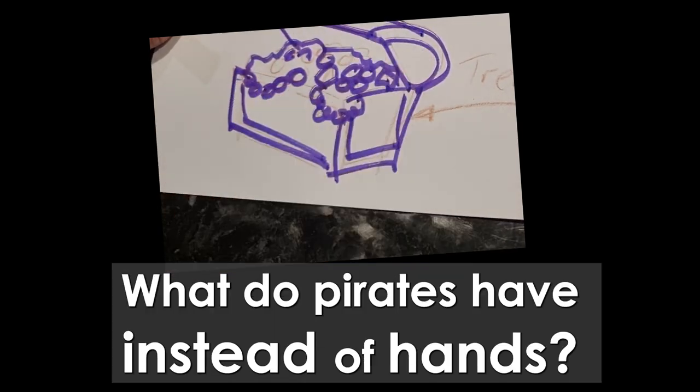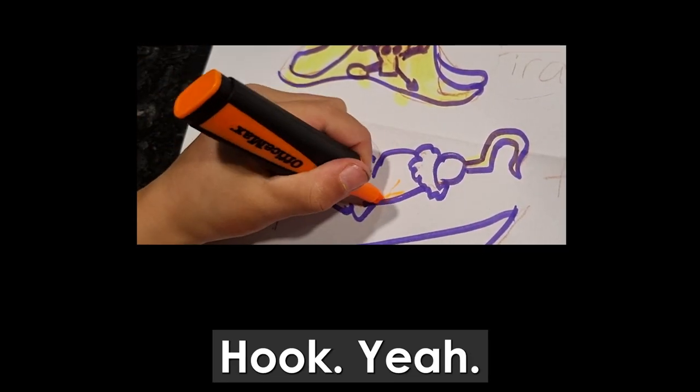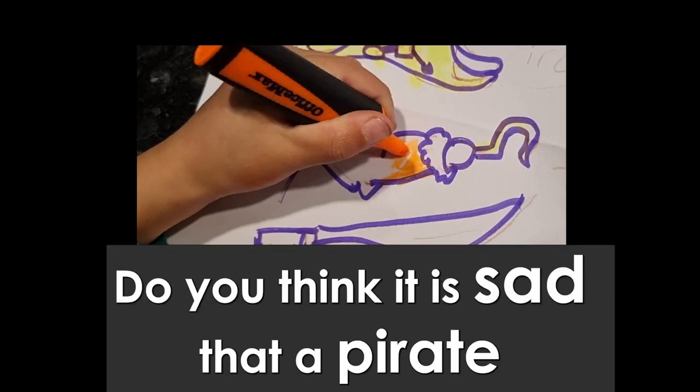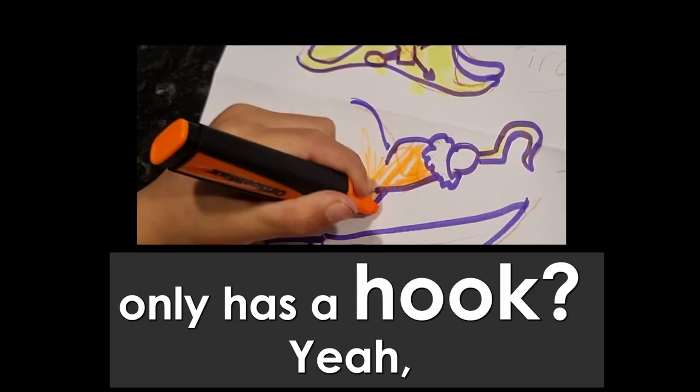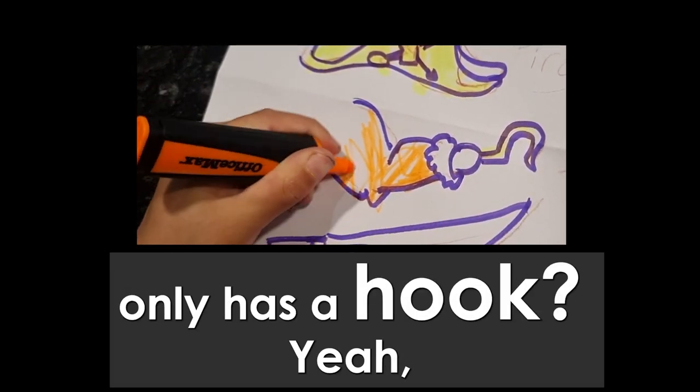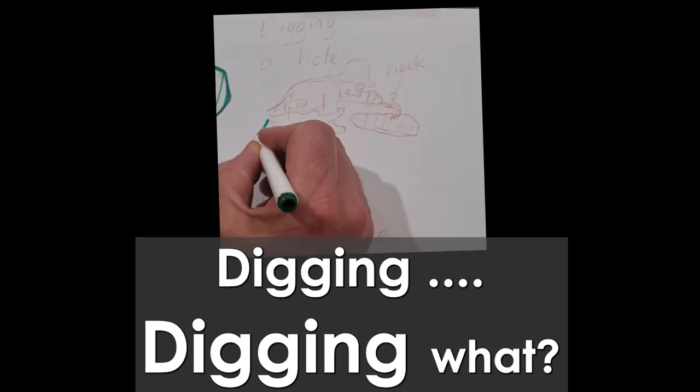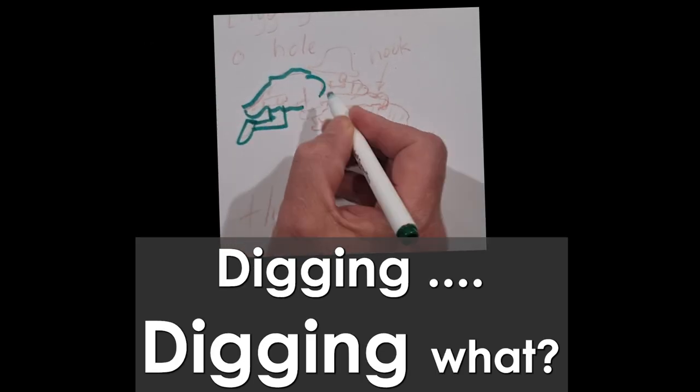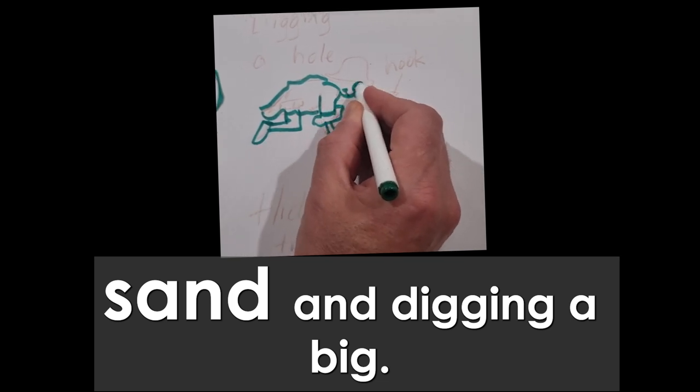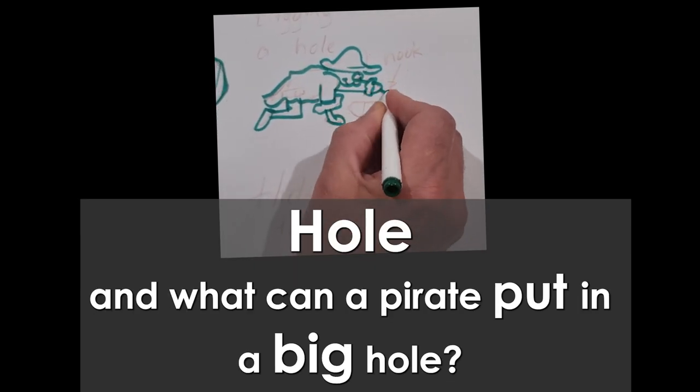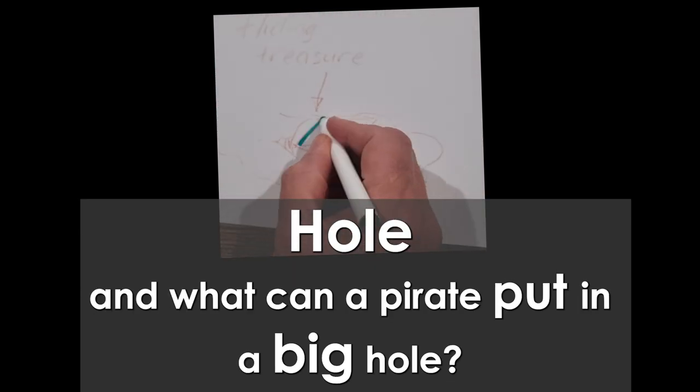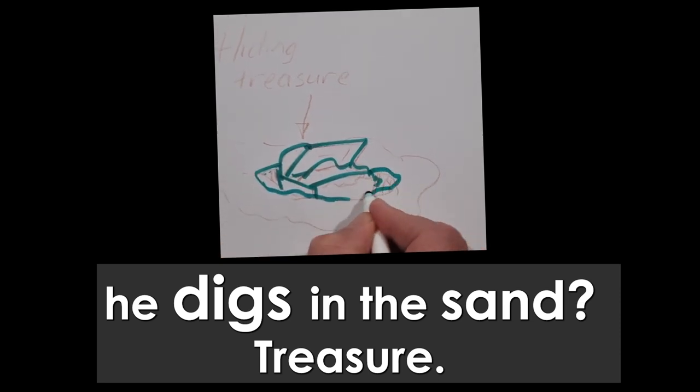What do pirates have instead of hands? Hook. Yeah. Do you think it's sad that a pirate doesn't have a hand and only has a hook? Yeah. But what might a hook be good for? Digging. Digging what? Sand. Digging sand and digging a big hole. And what can the pirate put in a big hole he digs in the sand? Treasures.